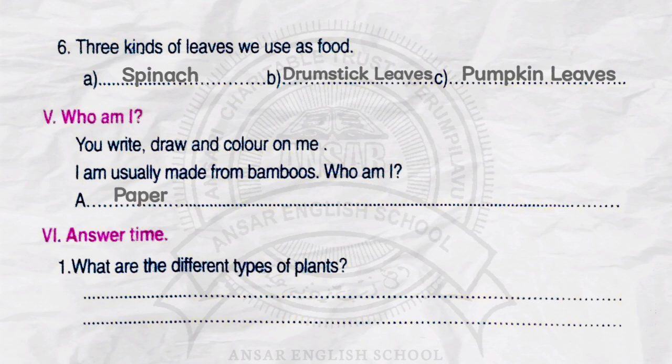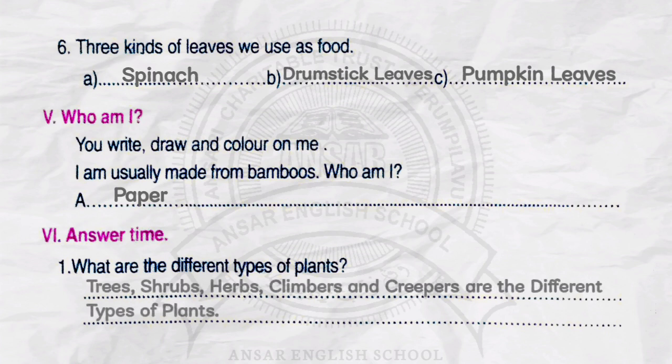Exercise number 6. Answer the following. Question number 1. What are the different types of plants? Answer: Trees, shrubs, herbs, climbers, and creepers are the different types of plants.